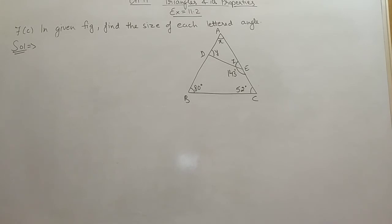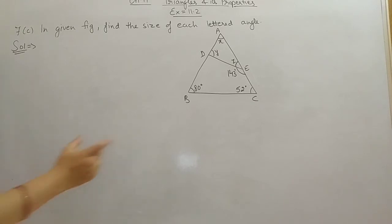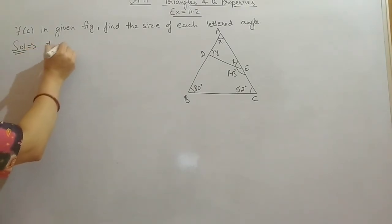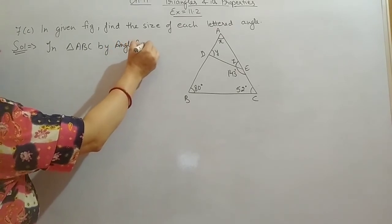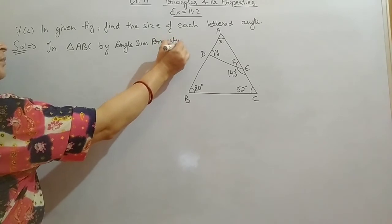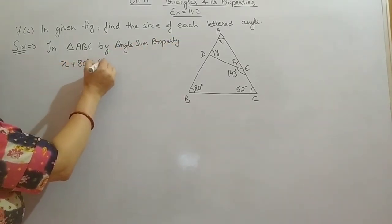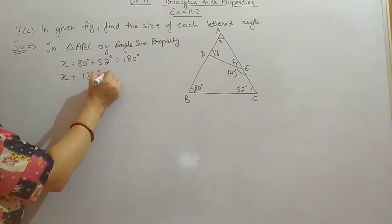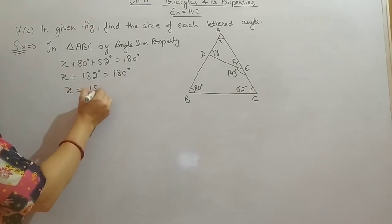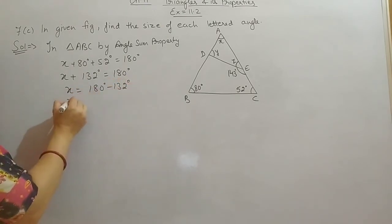Next is question 7, part C. In the given figure, find the size of each lettered angle X, Y, and Z. We name the triangle ABC. Looking at the big triangle ABC, we know two interior angles and one is unknown. In triangle ABC, by angle sum property, X plus 80 plus 52 equals 180 degrees. So 80 plus 52 is 132, and X equals 180 minus 132, which is 48 degrees.